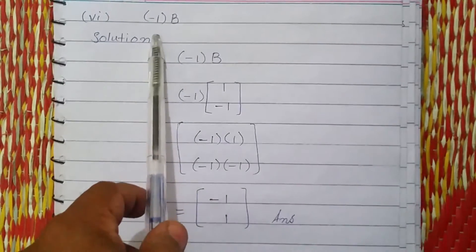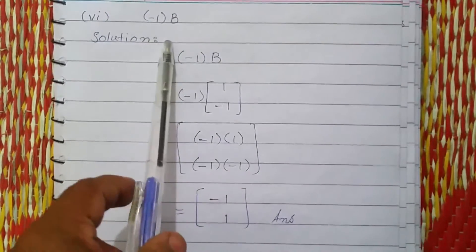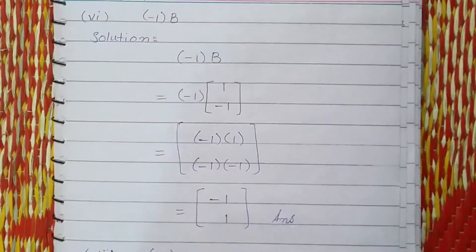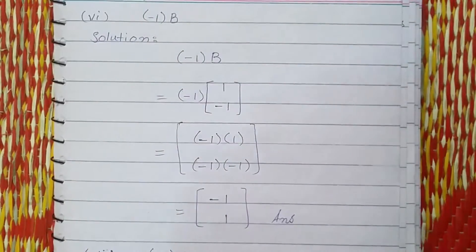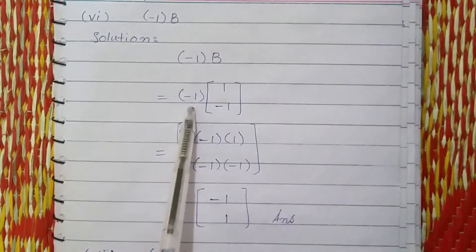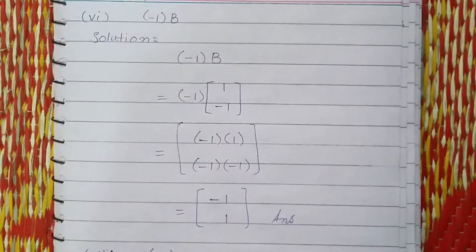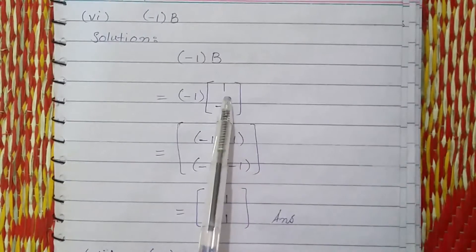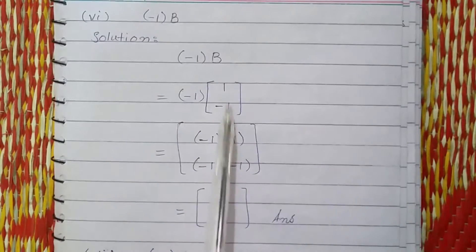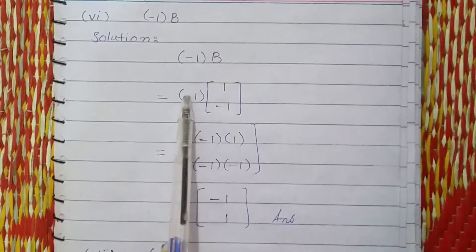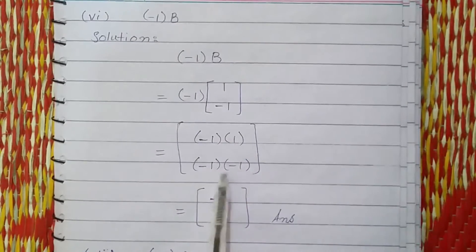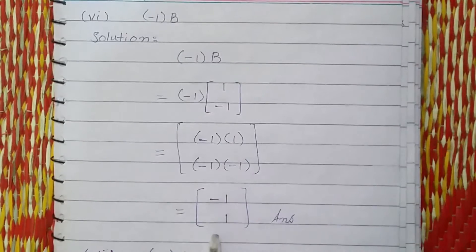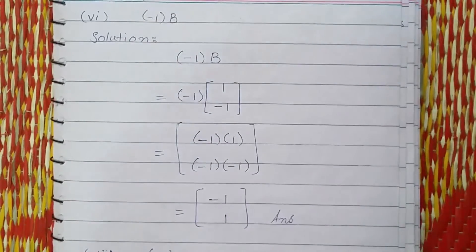In this question, minus 1 is being multiplied by B. This is the matrix B and I am multiplying minus 1 throughout to all the elements of matrix B. So this is minus 1 multiplied by 1. Minus 1 multiplied by minus 1: plus, minus minus, 1 ones are 1. Minus times minus is plus, and 1 ones are 1.